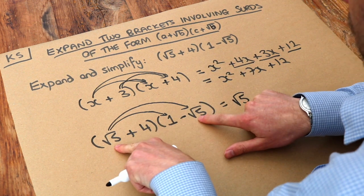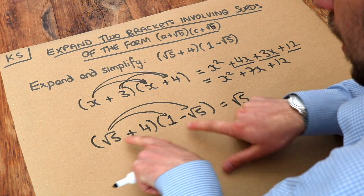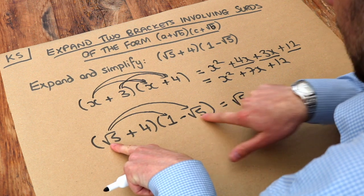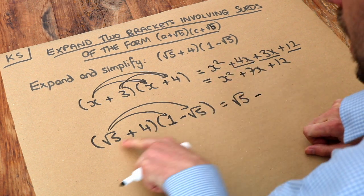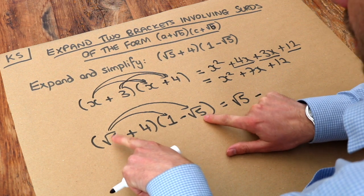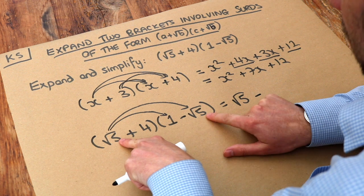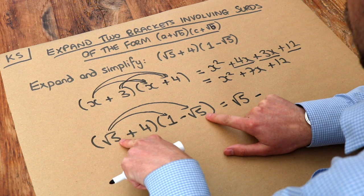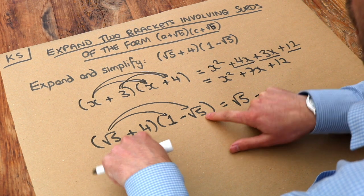Now the root 5 times minus root 5, now I tend to get the sign first, that's positive times negative, we know it's negative. And what's root 5 times root 5? Well remember, when we multiply two surds together, we times these numbers together, 5 times 5 is 25, so it's root 25, and the square root of 25 is 5.